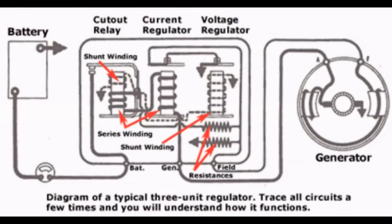See, in a three coil setup is this where we have a cutout relay, a voltage regulator, and a current regulator. Because although the voltage is now being controlled, it is still possible to have too much current flowing. In the current regulator there's a few turns of thick heavy...